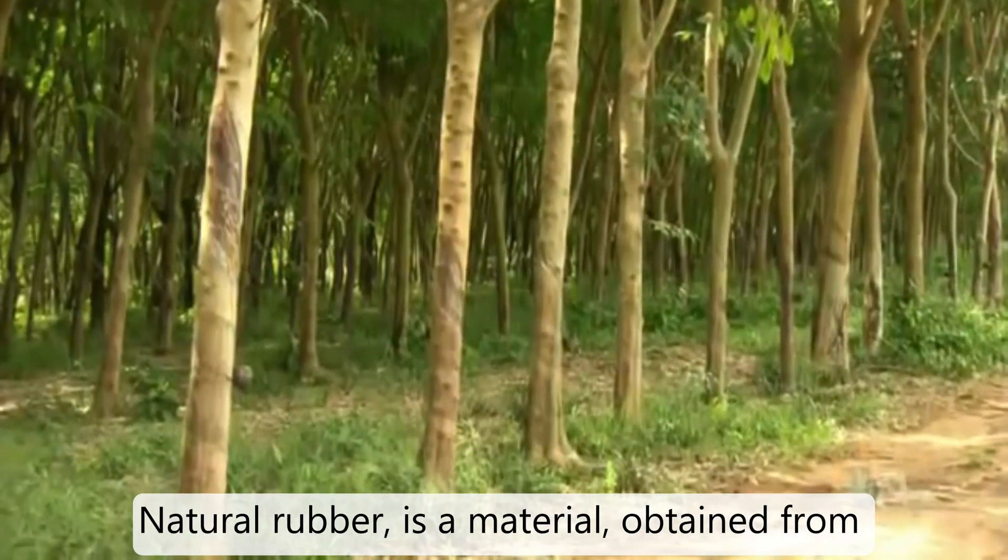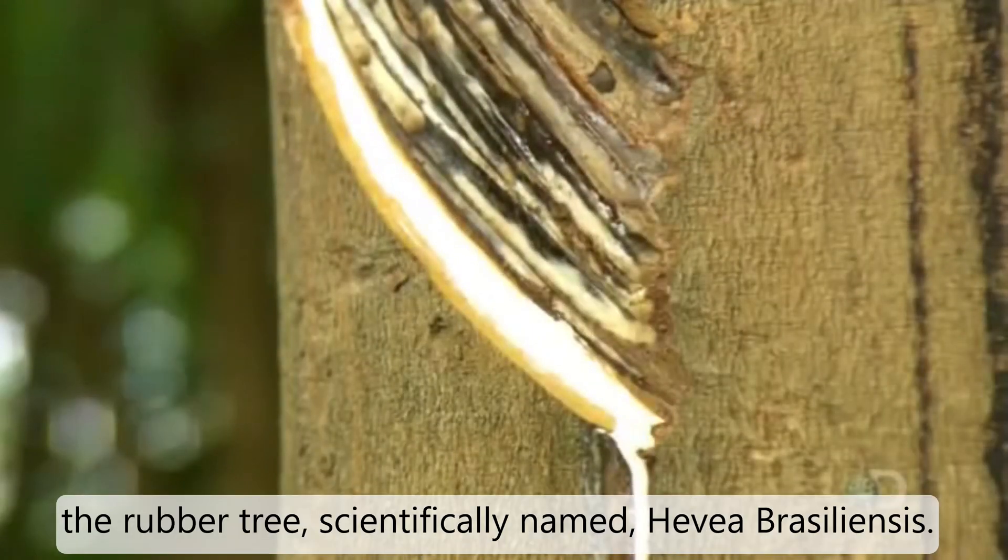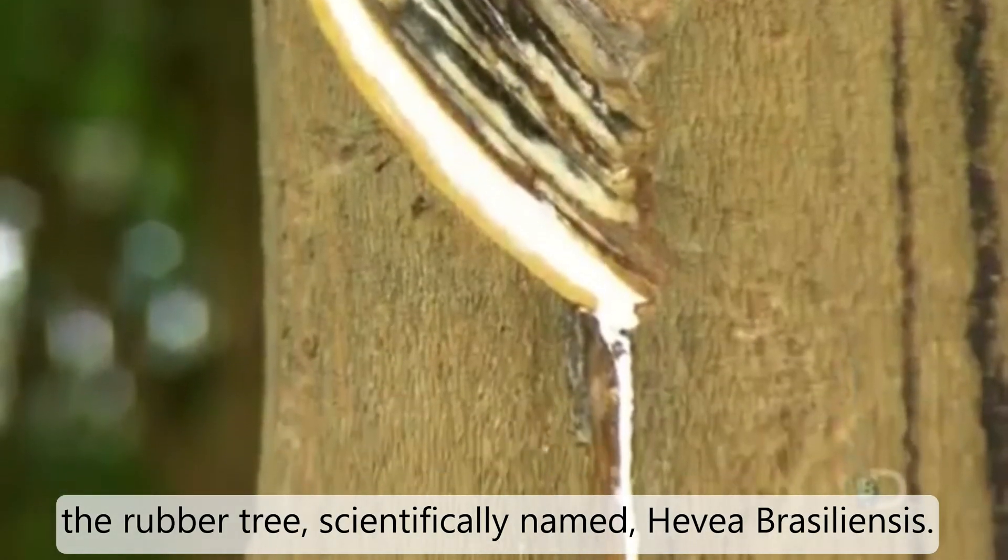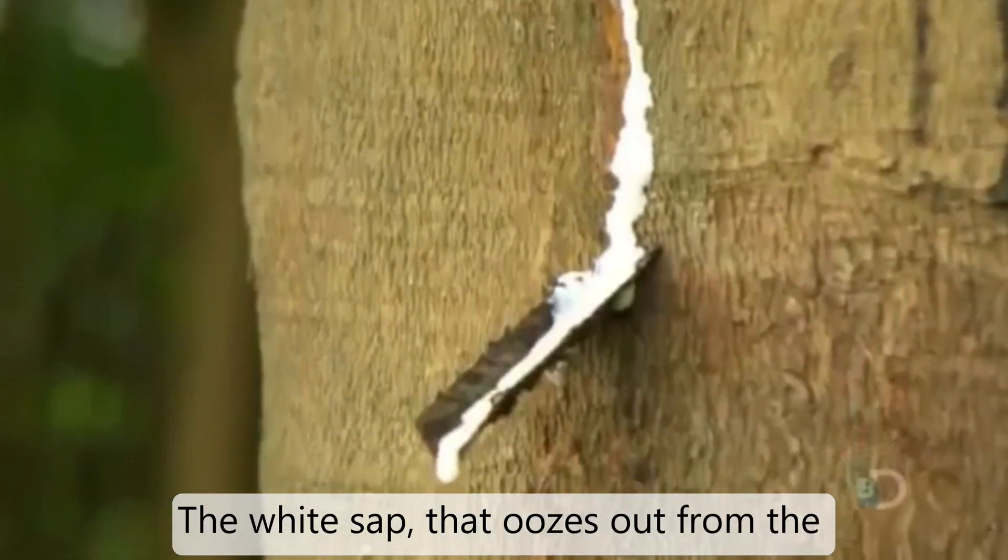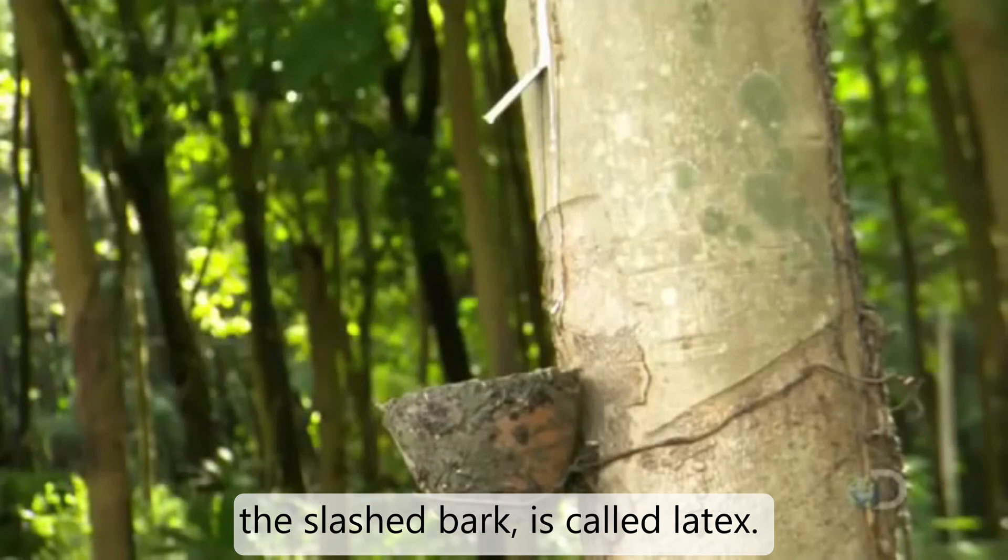Natural rubber is a material obtained from the rubber tree, scientifically named Hevea brasiliensis. The white sap that oozes out from the slashed bark is called latex.